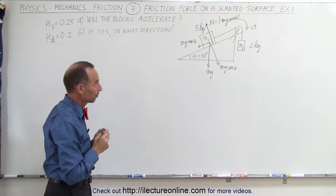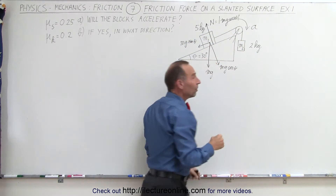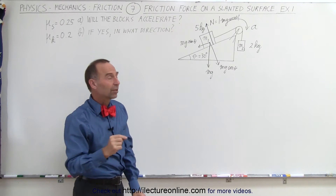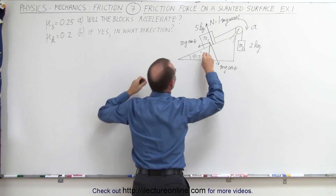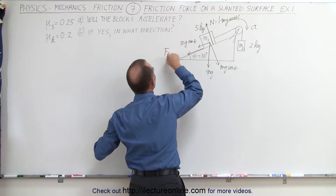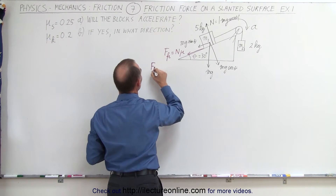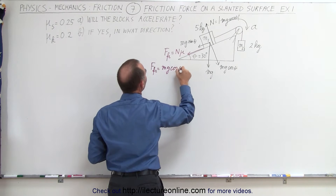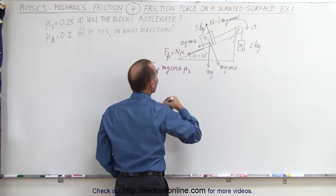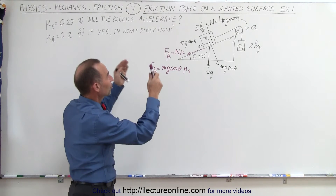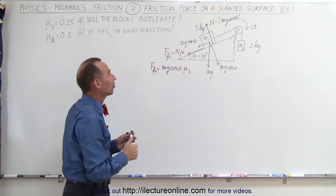Now for the friction force. In our example we're assuming that the whole system will accelerate in this direction, and the direction of the friction force is opposite to the direction that the system will move if there was no friction. So if we assume everything will accelerate this way, the friction force will be an opposing force in this direction, which is the normal force times mu, and the normal force is Mg cosine theta. So the friction force is Mg cosine theta times mu sub s, because we need to get the motion started from a stationary position.